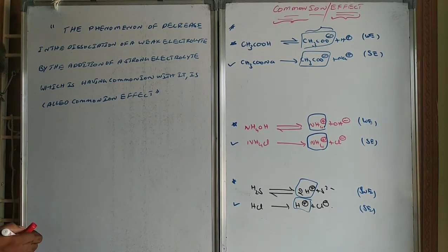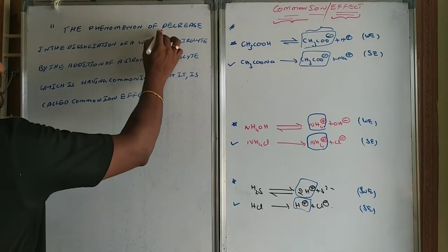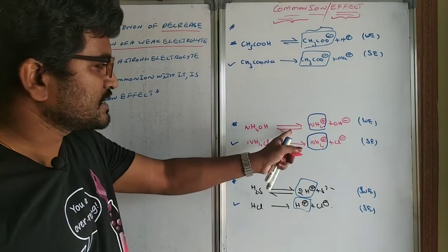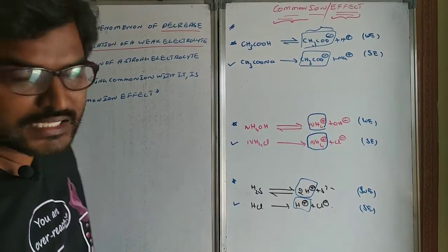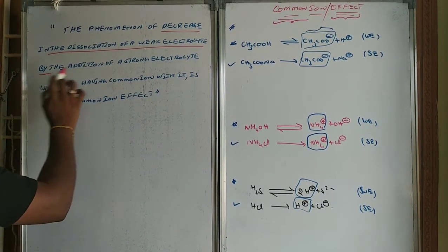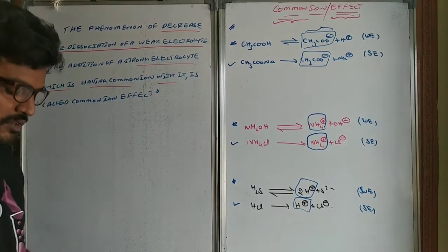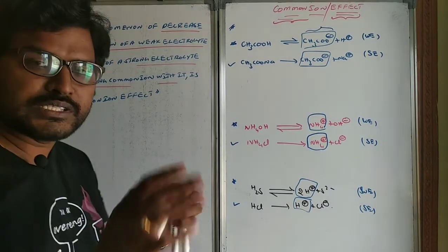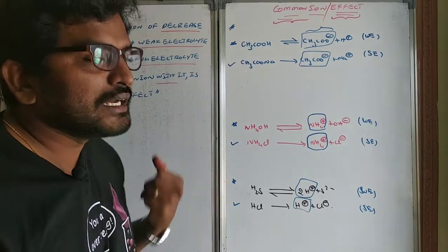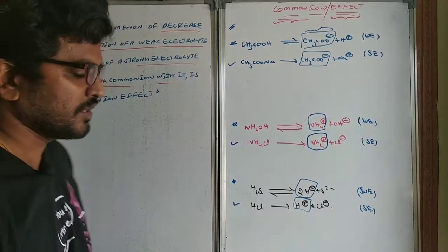The statement clearly defines this: the phenomenon of decrease in the dissociation of a weak electrolyte — this is the weak electrolyte and its dissociation decreases — by the addition of a strong electrolyte which is having a common ion. If there is no common ion, there is no change in solubility. But if there is a common ion, there will be a decrease in the dissociation. This phenomenon is called the common ion effect.